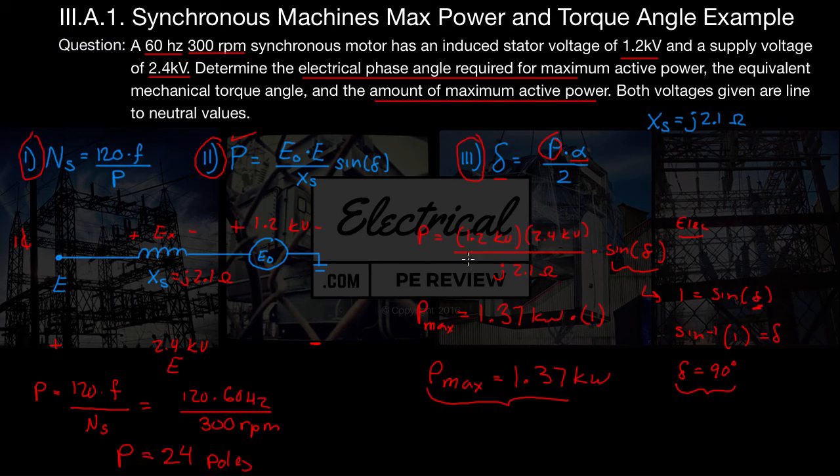I think it's time to solve for alpha. I'm going to rewrite that to solve for alpha. We can say alpha equals delta times 2 divided by P. All I did was I solved for alpha. We already know what delta has to be for maximum power. We found that to be 90 degrees. So I've got 90 degrees times 2 divided by our number of poles we just found to be 24. We punch that in our calculator, and we come up with an answer of 7.5 degrees.